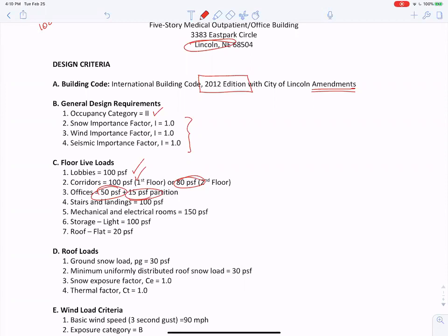Stairs and landings, these are just all things I read in the ASCE 7 and IBC code. Stairs and landings, 100 PSF. HVAC rooms, 150 PSF. I did say light storage, so there's 100 PSF for light storage. And a flat roof has 20 PSF live load.